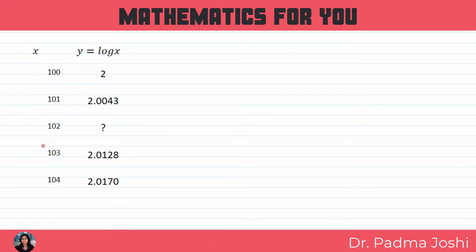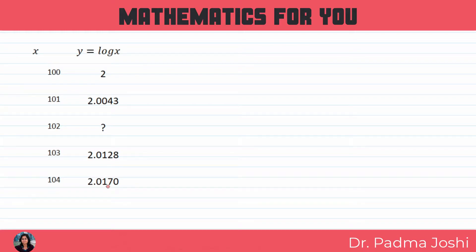We will write these equally spaced values for x. The function is log x, because we have been given the values of log 100, log 101, etc. So y = log x. The function is known and values are given. The value for 102 is missing, so we mark it with a question mark.